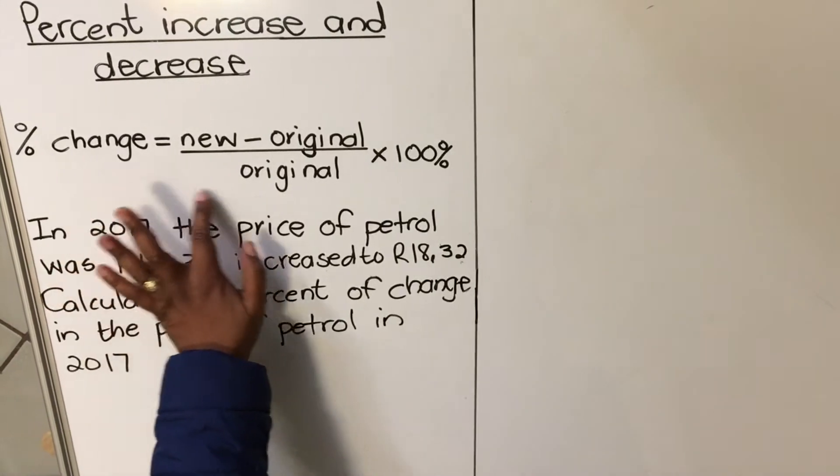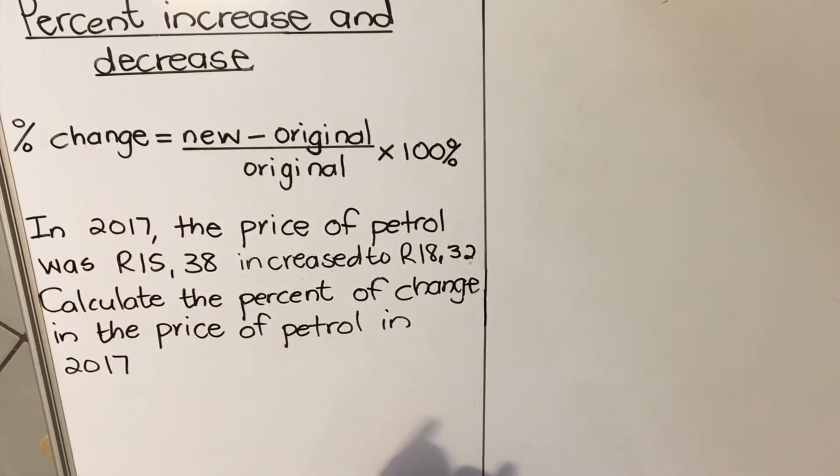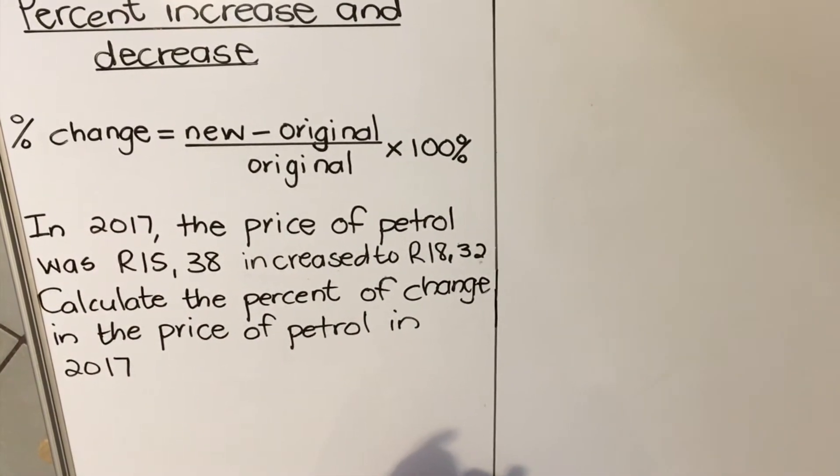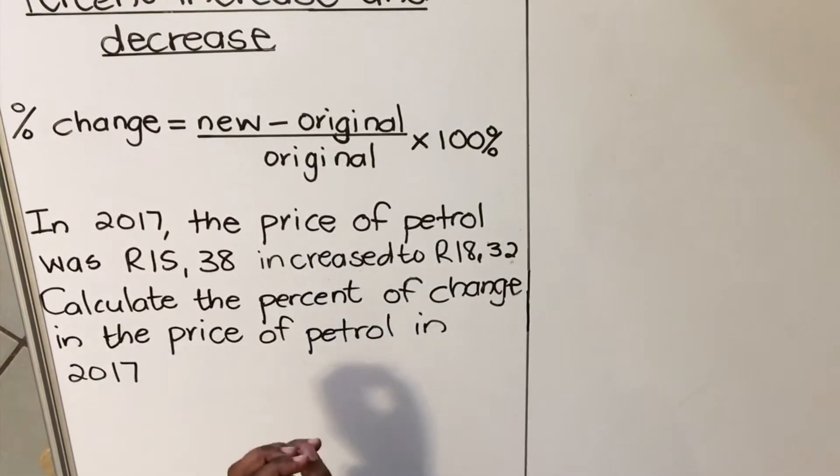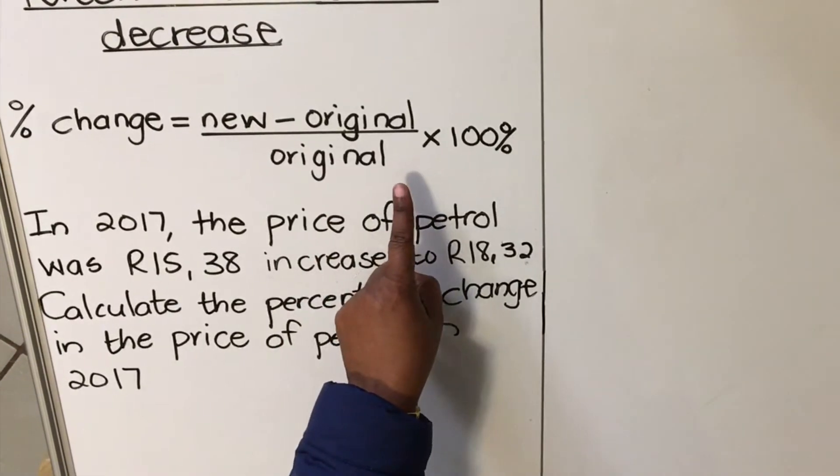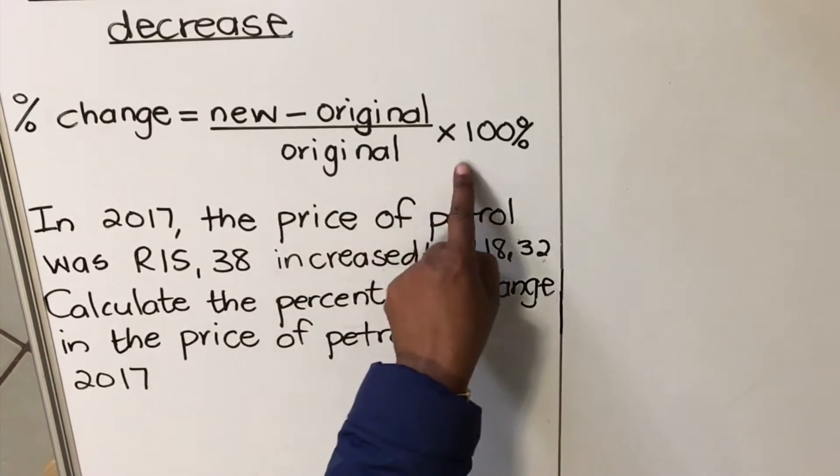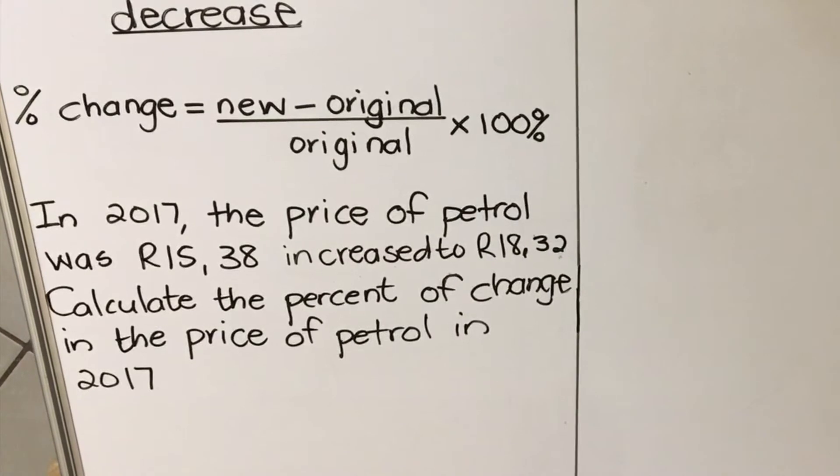You get this formula - this formula usually they'll give it to you in your formula sheet. It says percentage change equals new amount or new value that you are given minus original, divided by original, multiplied by 100.